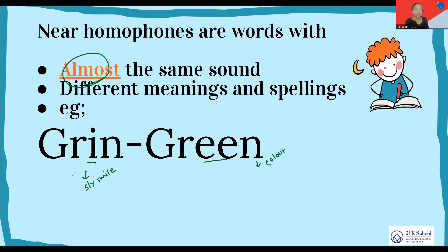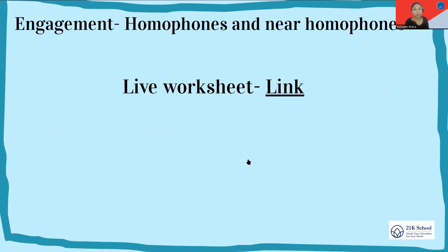For example, how can we use the word 'grin' in a sentence? We can say: 'She had a sly grin on her face when she saw the boy getting hurt.' So a grin means a sly or cunning smile. And 'green' can be used as a color — for example, 'The caterpillar is eating the green leaves.' Such words are called near homophones.